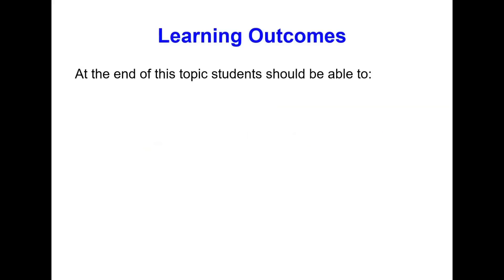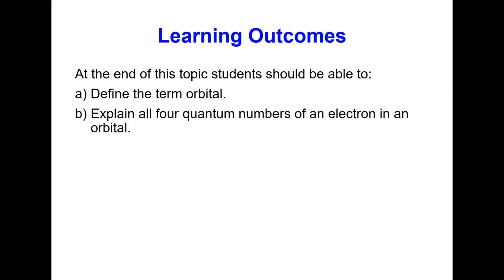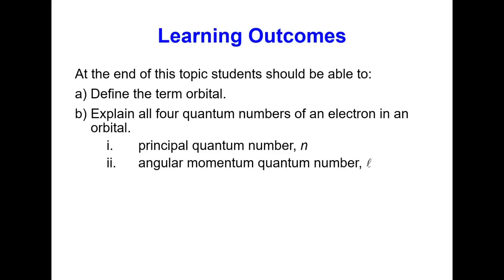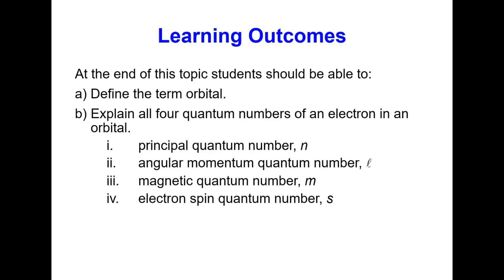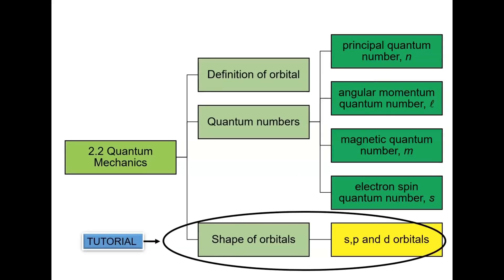At the end of this subtopic, students should be able to define the term orbital and explain all four quantum numbers of an electron in an orbital. The four quantum numbers are: principal quantum number N, angular momentum quantum number L, magnetic quantum number M, and electron spin quantum number S.